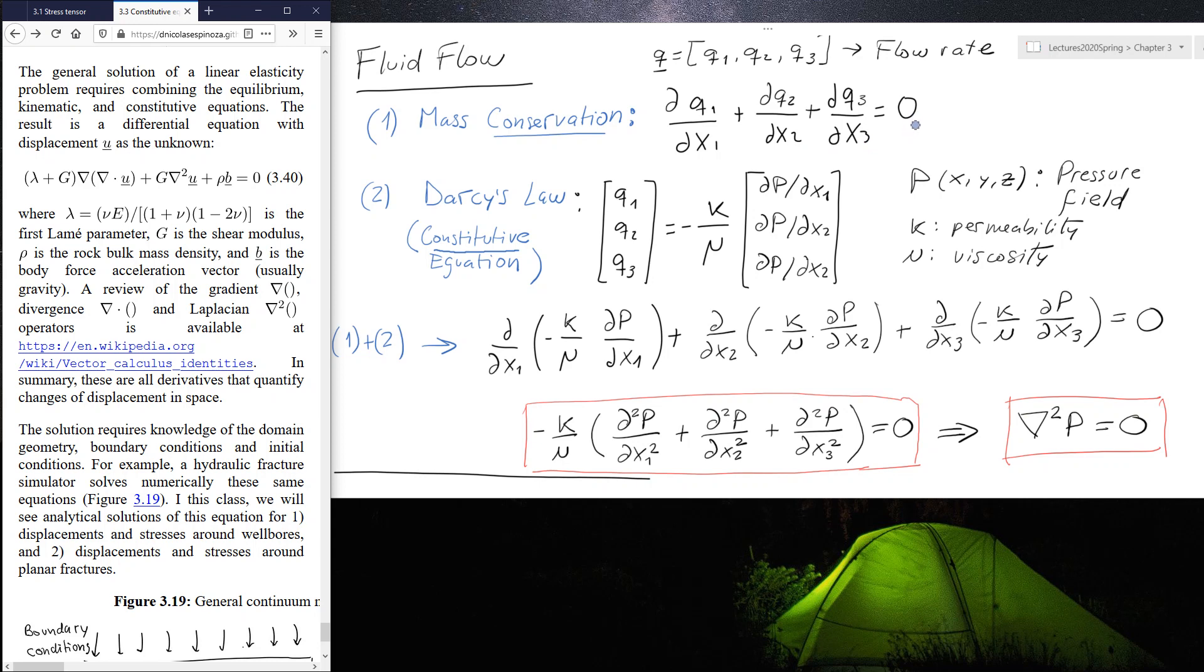In physical terms, this means everything that gets in has to get out. Unless there is a change with compressibility that here we're not including because we're just making this very simple. So if this is incompressible, then everything that gets in has to get out. This is mass conservation.